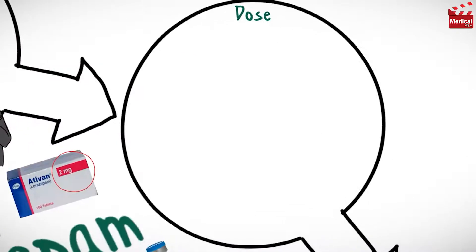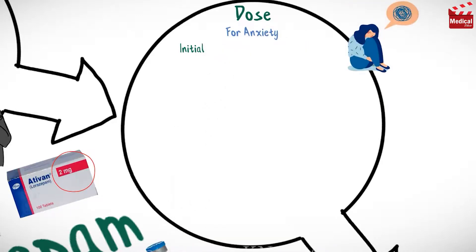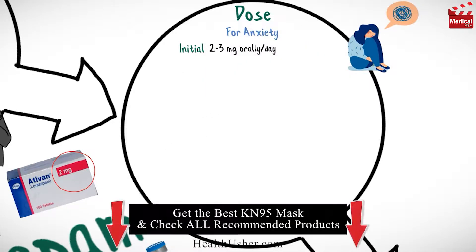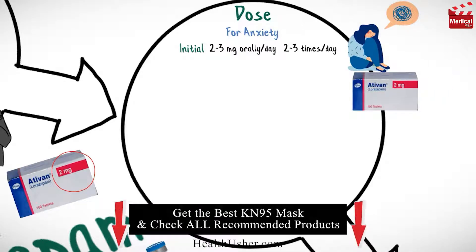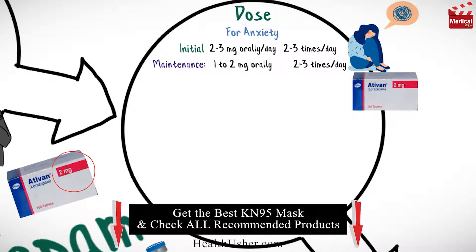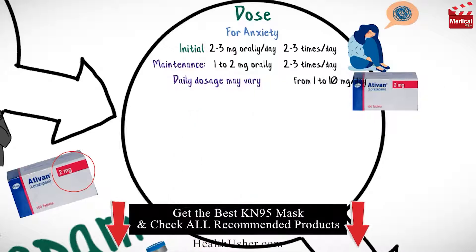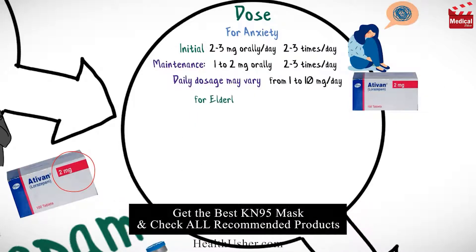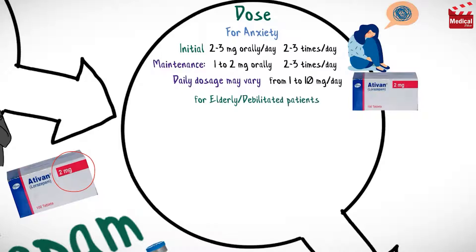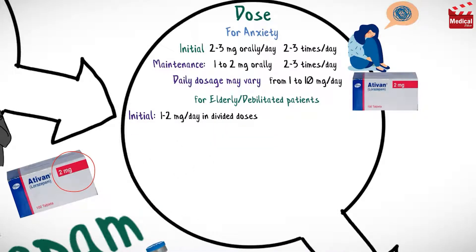The usual initial dose of Lorazepam for adults for anxiety is 2 mg to 3 mg orally per day, given 2 to 3 times per day. The maintenance dose is 1 mg to 2 mg orally 2 to 3 times a day. The daily dosage may vary from 1 to 10 mg per day. For elderly and debilitated patients, the usual initial dose is 1 to 2 mg per day in divided doses.